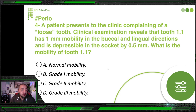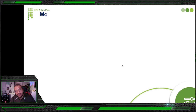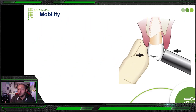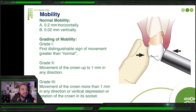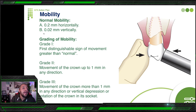When reading a long question, do not just pick the first piece of information and move on. The one millimeter buccal-lingual mobility might suggest Grade 2, but the statement that the tooth is depressible in the socket by 0.5 millimeter is critical information you cannot ignore. Let's establish what normal mobility means first: normal mobility is up to 0.2 millimeter horizontally — which is acceptable because teeth have PDL around them. Vertical mobility of 0.02 millimeter is essentially invisible to the naked eye.